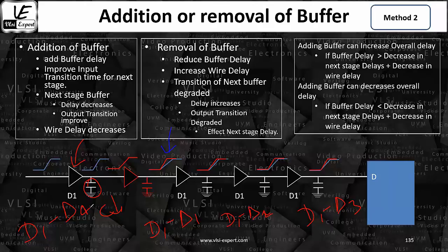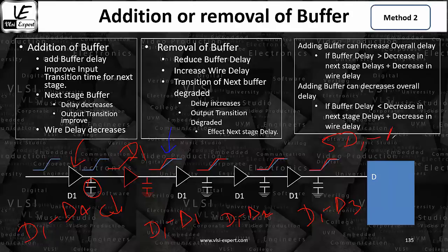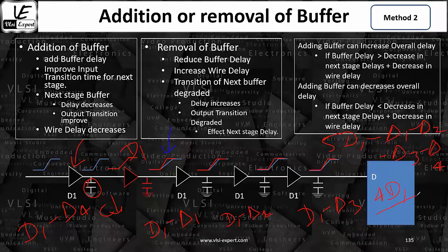Now, if I ask what is the overall delay, you can sum up all the delays. You have 5 D1 terms — because the new buffer is also a D1 — minus delta 1, minus delta 2, minus delta 3, and minus delta 4. Initially, in the original condition, the delay was 4 D1. Now there is a change: it is 5 D1 minus delta 1 minus delta 2 minus delta 3 minus delta 4.